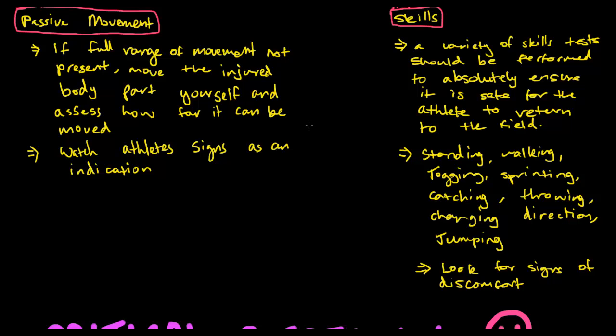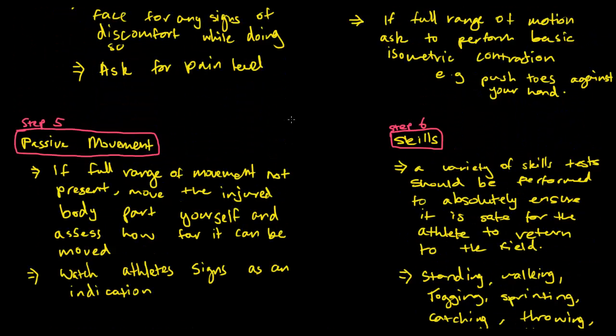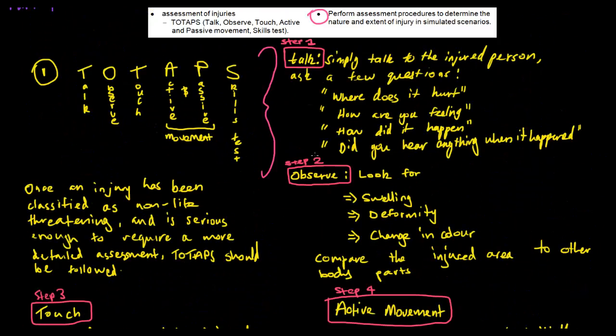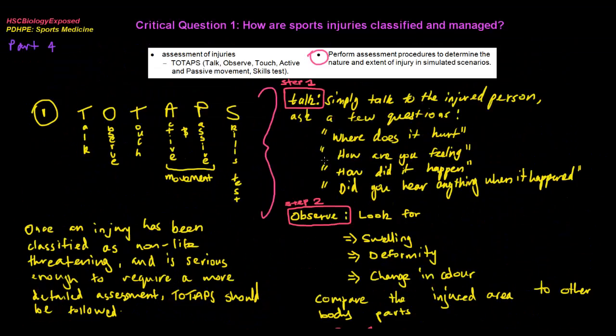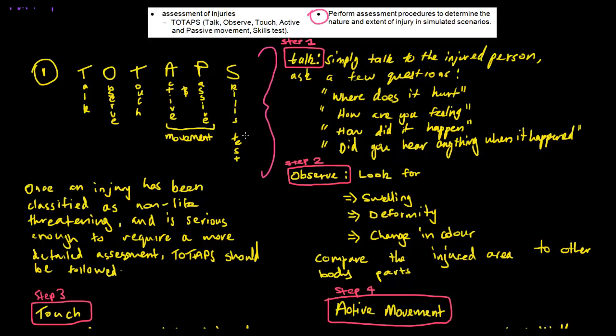This is pretty much everything, the full overview of toe taps, and it's everything you actually need to answer any questions related to toe taps. But there's one thing I want to make clear: you need to have examples, and you need to make sure that you provide a thorough overview. In the beginning, I kind of forgot to mention this, but toe taps is used when an injury has been classified as non-life-threatening and is serious enough to require a more detailed assessment. Toe taps should be followed in any sport which needs some sort of assessment to make sure that the person can go back onto the field, but at the same time, the injury isn't that life-threatening.